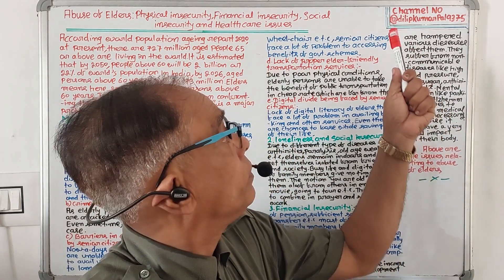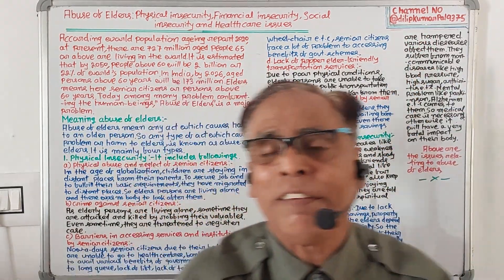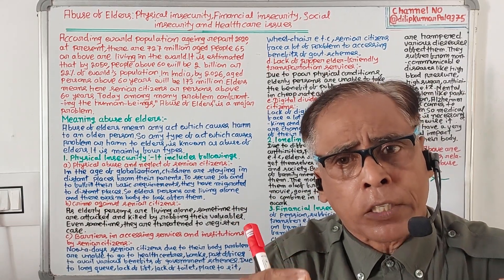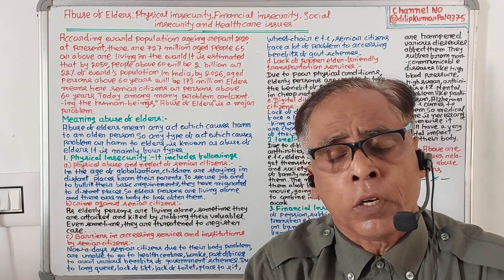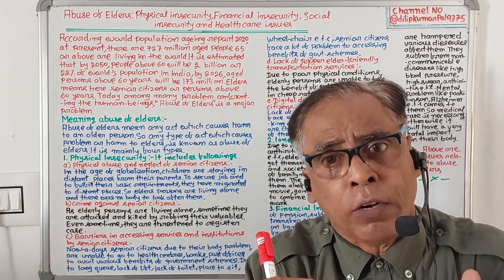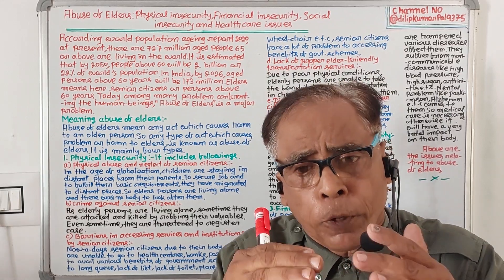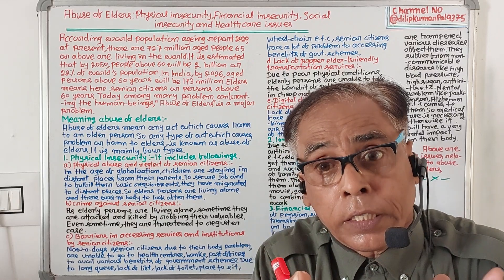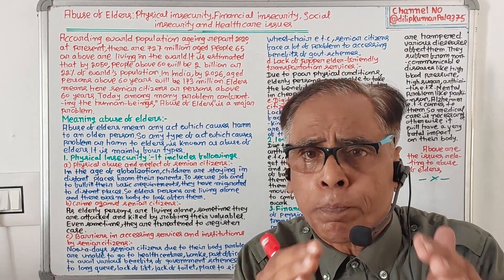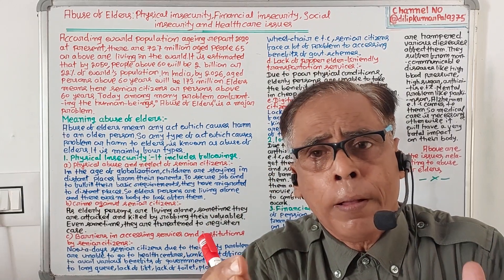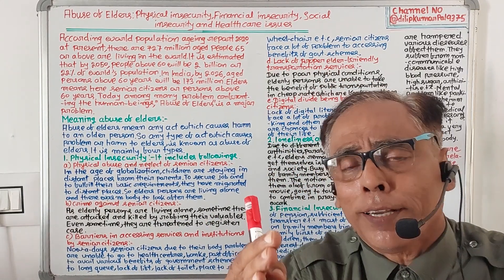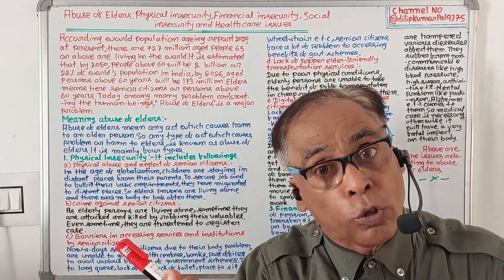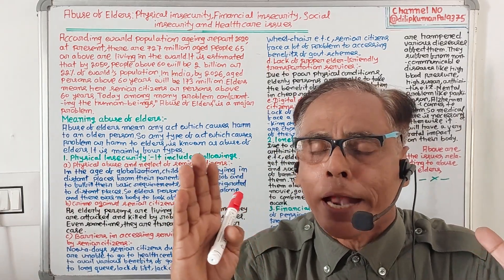The name of my channel is Dilip Kumar Pal 9375, where you will find videos from plus-3 first semester political honors up to plus-3 sixth semester, videos of ethics and value from first to fifth semester, environmental studies, and some videos of plus-2 political science. Just write my name and the topic in Google or YouTube and you will get all videos in Odia and English.